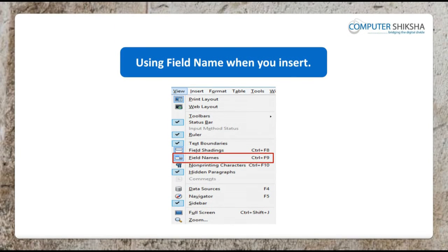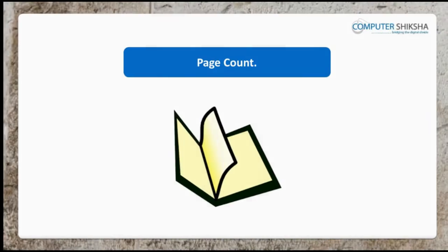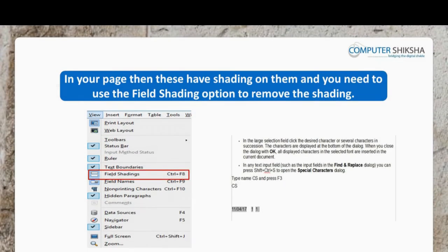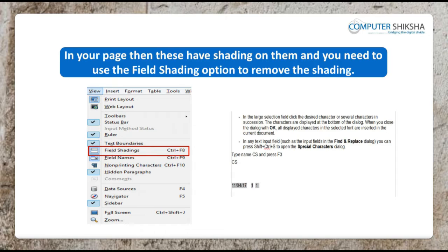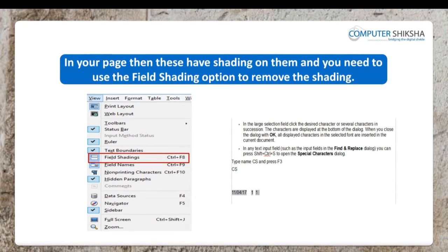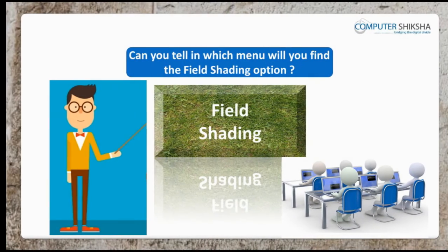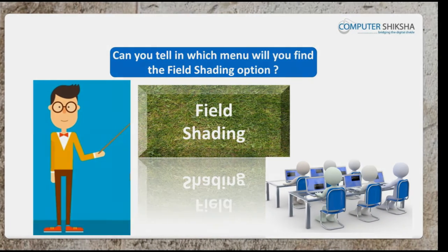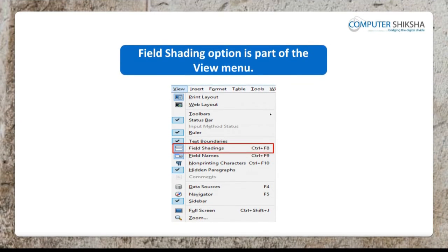Can you tell how you may remove shading from the field name? Using field name, when you insert time, date, etc. in your page, then these have shading on them. And you need to use the field shading option to remove the shading. Can you tell in which menu will you find the field shading option? Field shading option is part of the View Menu.